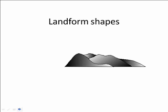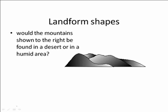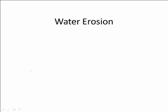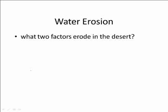Landforms in a desert tend to be distinctive. Would these rounded hills form in a desert or in a humid area? The fact that they're rounded tells you it's probably a humid area, because desert topography is very angular. The reason for that is that deserts have very little chemical weathering because they have very little water. Water does erode in the desert, however. In addition to water, there's another factor that erodes, and that is wind.